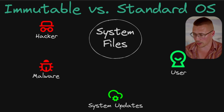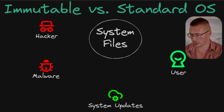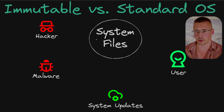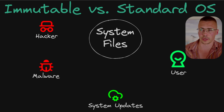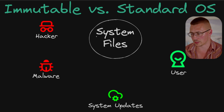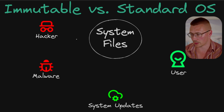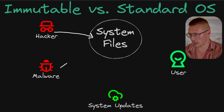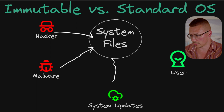First, we'll talk about how a standard operating system works. So you have your system files — think of Windows in this case. You have things like your System32 folder, your Windows folder, program files, all of that. When you're running a Windows operating system, basically everyone and everything can go in there and start messing with stuff.